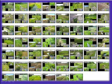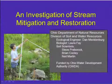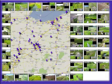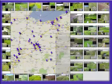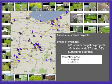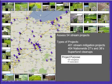We assessed 54 streams distributed around the state of Ohio. The stream restoration work came from 401 mitigation projects — nationwide permits 27 and 38, and one Superfund cleanup. Nationwide permit 27 is stream restoration with a streamlined review, and those are sections under the Clean Water Act section 404. Having a nationwide permit means a streamlined review process for doing a modification of a stream.